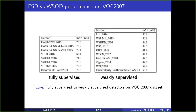Summarizing these issues in a table: mean average precision is the metric used to compare detection quality. Compared to fully supervised detectors, weakly supervised methods are very far behind. This comparison is on the Pascal dataset, a popular benchmark for object detection. Weakly supervised methods are around half the mean average precision of fully supervised detectors.